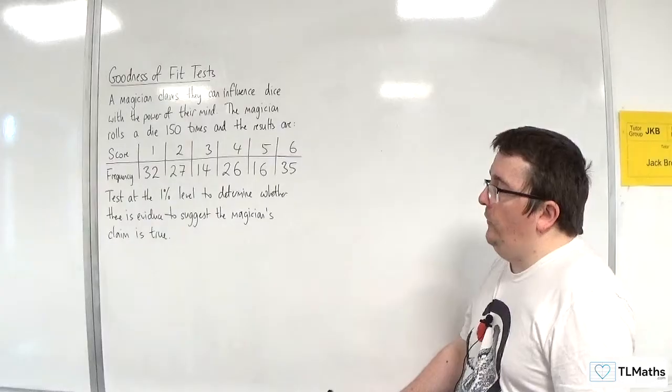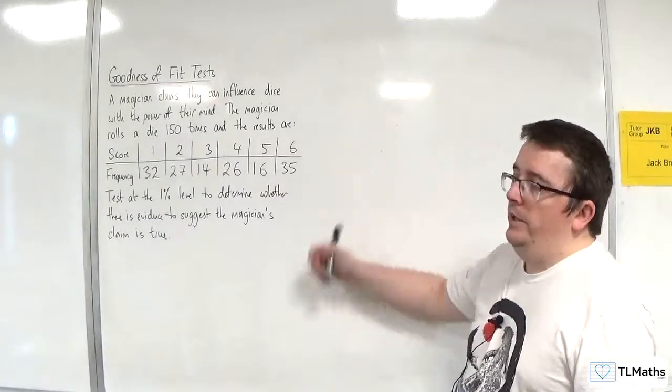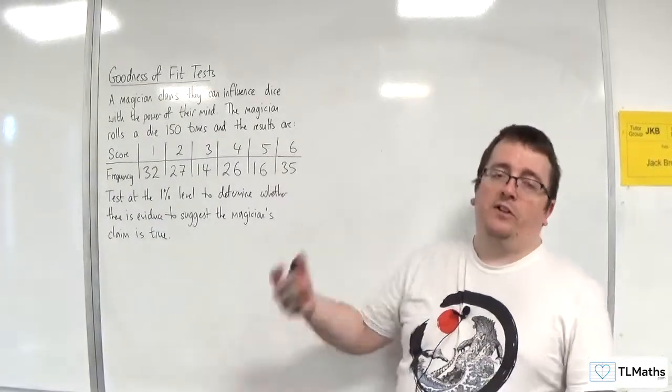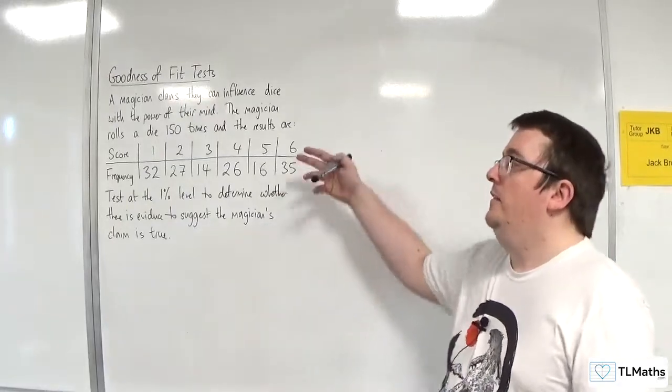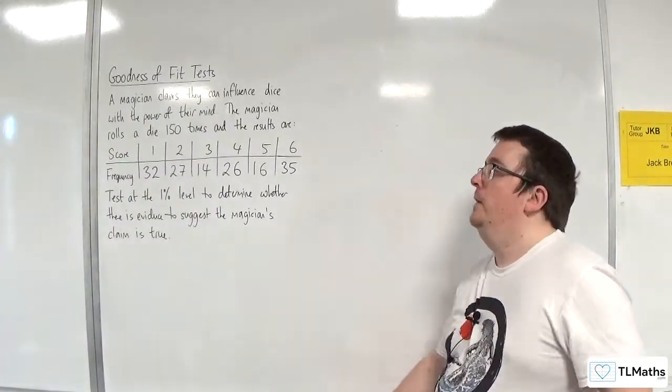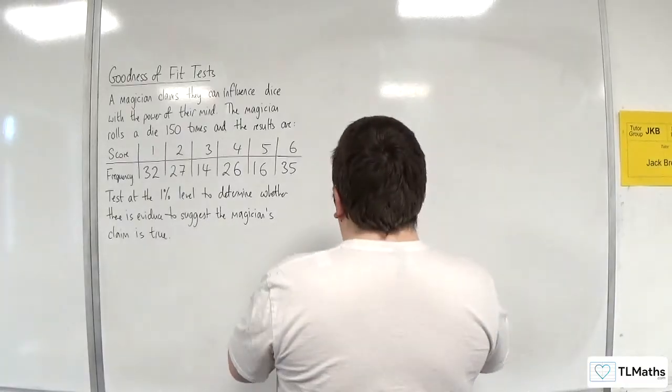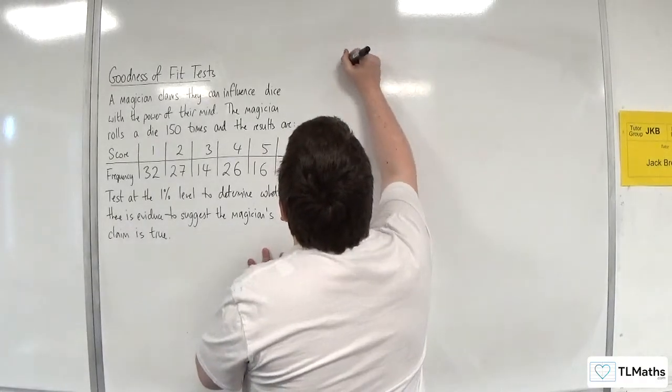Okay, so what you're seeing here are the observed frequencies. If you think back to chi-squared contingency table test, here's the table of observed frequencies. So let's build up a new table up here. So, score, and we're going to have the observed frequency. So I'm just going to change frequency to fo.